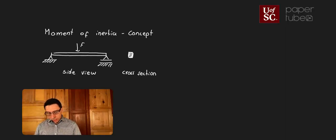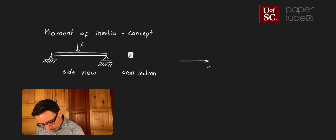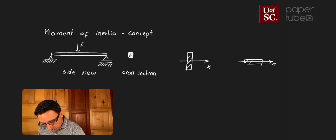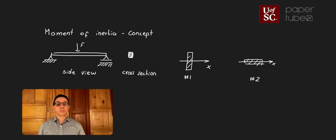When we look at cross sections of beams, we can have different types. Let's say we have two cross sections — I'll draw an x-axis and show two different shapes. My assumption is that both of them have the same area. I'll call this number one and this number two just to differentiate between them. Now my question is: which of these two cross sections will be more resistant to bending, assuming the bending is similar to what we have on the left-hand side of the diagram?